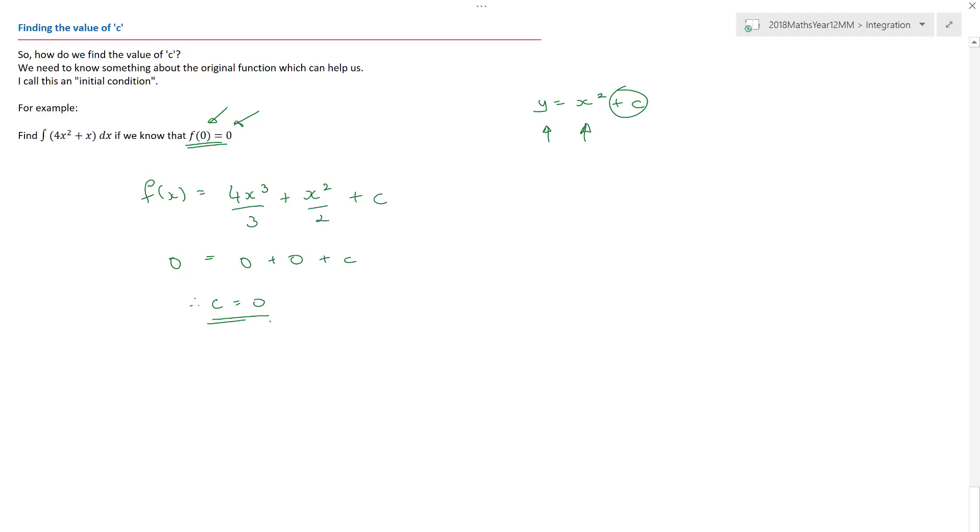And so I can now confidently state, because of that initial condition, that my actual function has the equation four x cubed on three plus a half x squared. I don't need to write the plus C anymore, because they gave me some information relating to the curve.